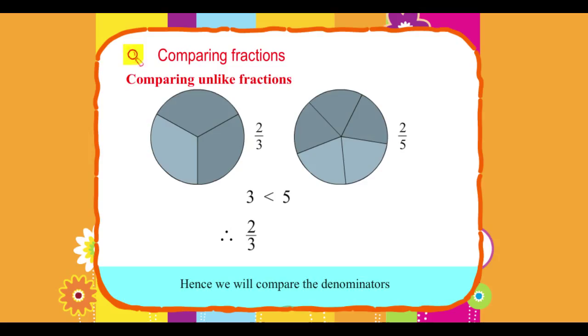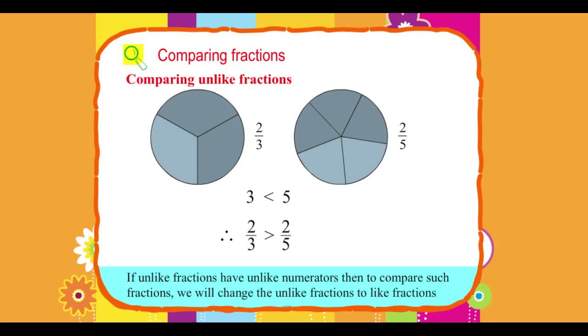2 upon 3 greater than 2 upon 5. If unlike fractions have unlike numerators, then to compare such fractions, we will change the unlike fractions to like fractions.